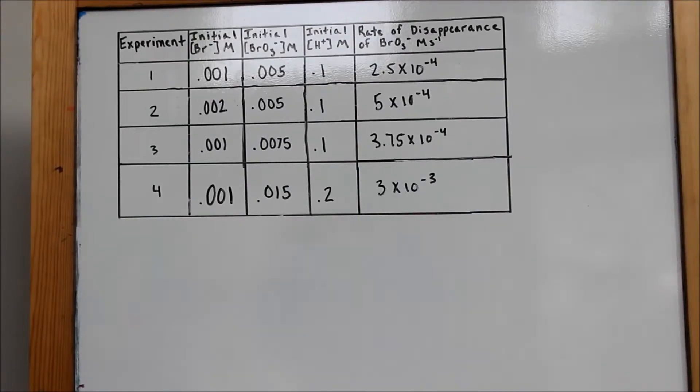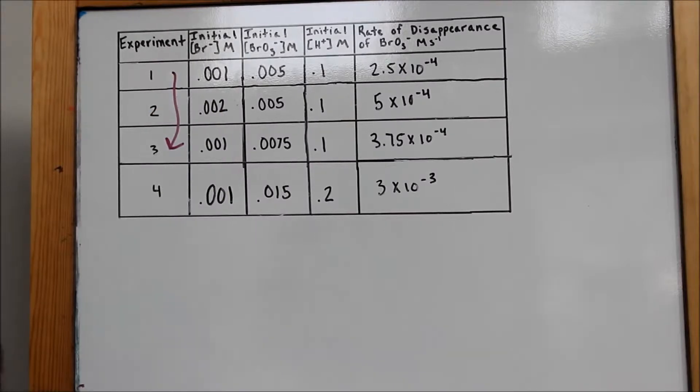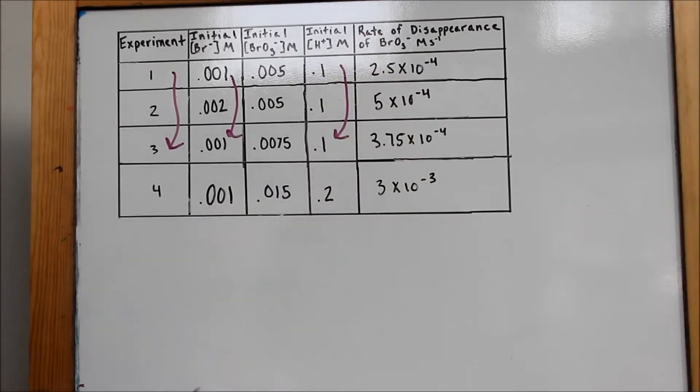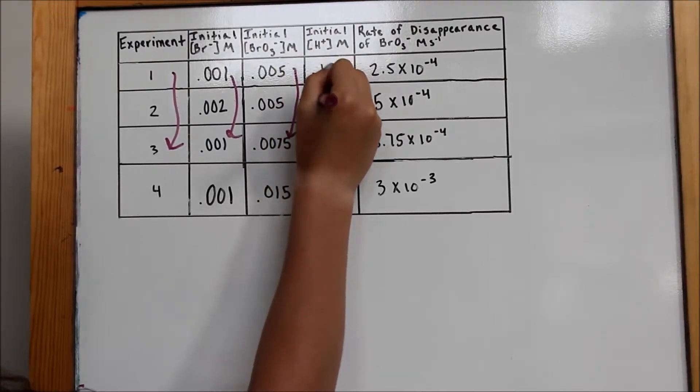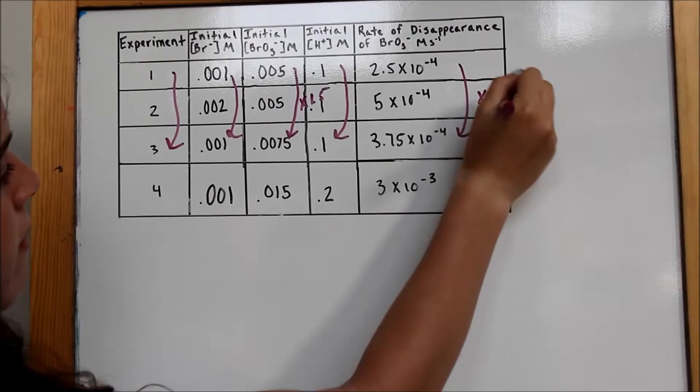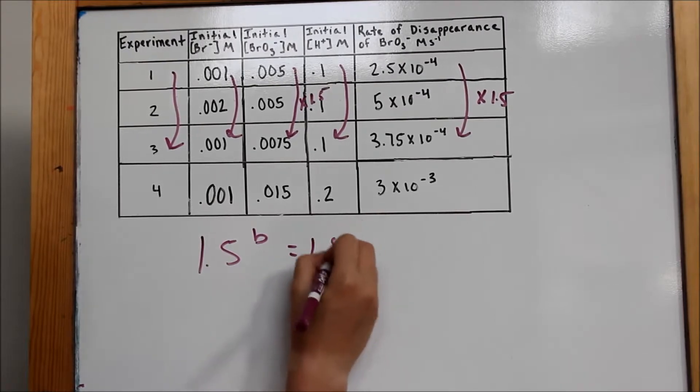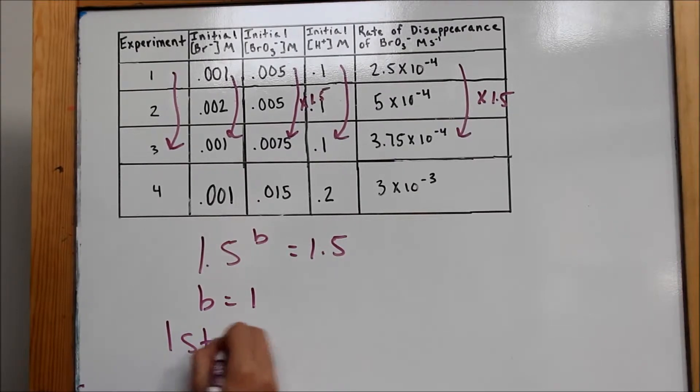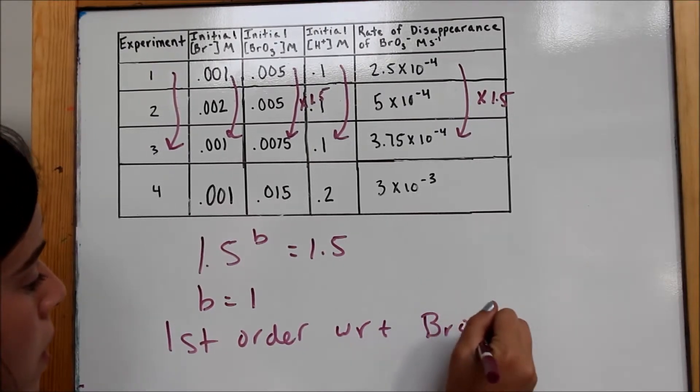Part A, II. To find the order of BrO3-, we will verbally compare experiments 1 and 3, because both the concentrations of Br- and H+ remain the same, while the concentration of BrO3- is multiplied by 1.5, and the rate is multiplied by 1.5. Therefore, we can say that 1.5 to the B equals 1.5. In solving this equation, we see that B equals 1, meaning that it is first order with respect to BrO3-.